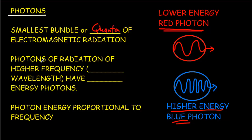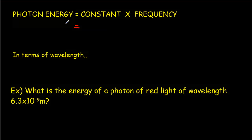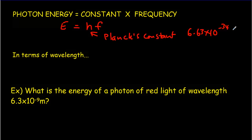Photons of higher frequency radiation — that is, shorter wavelength — have higher energy. That photon energy, which we'll call E, is proportional to the frequency of the radiation. So if we double the frequency, our photons become twice as energetic. The proportionality constant is given the letter H and it's called Planck's constant, equal to 6.63 × 10⁻³⁴ joule-seconds.